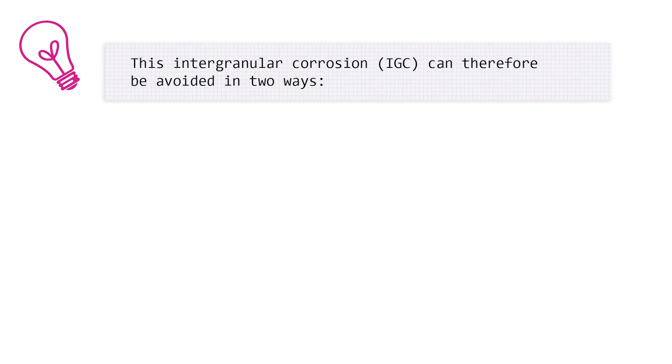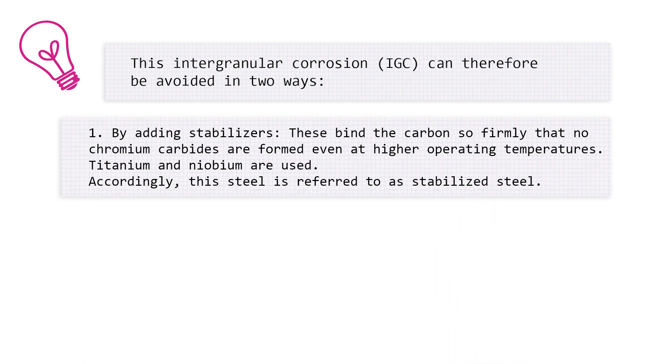First, by adding stabilizers. These bind the carbon so firmly that no chromium carbides are formed even at higher operating temperatures. Titanium and niobium are used. Accordingly, the steel is referred to as stabilized steel.